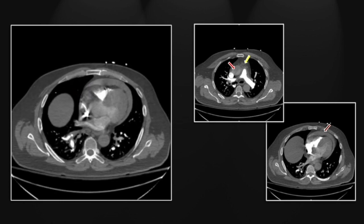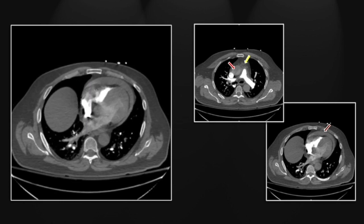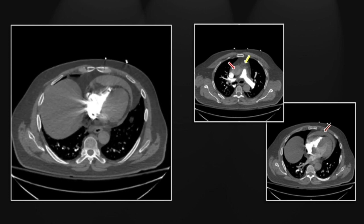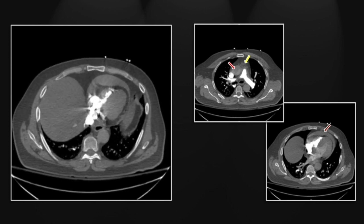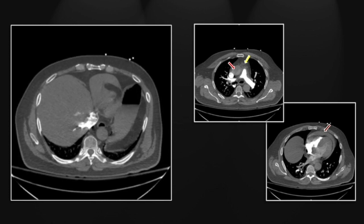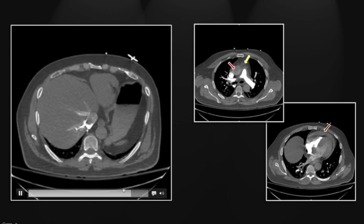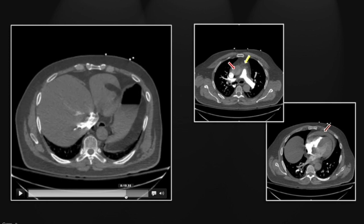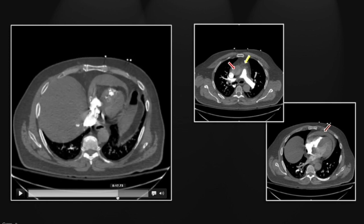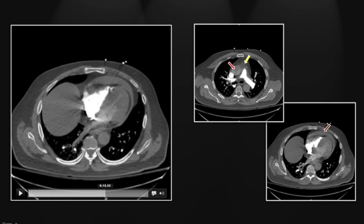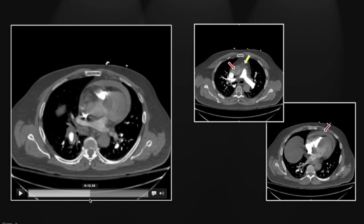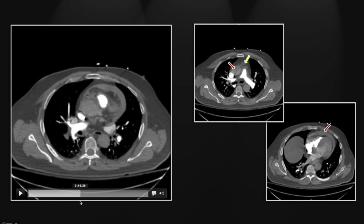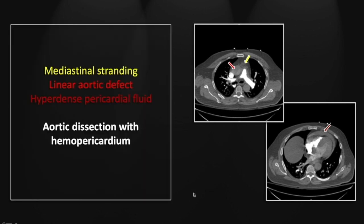Note the distortion of the right ventricle, backflow into the hepatic veins and IVC, and of course an extensive isodense or even hyperdense pericardial fluid collection. So that is an aortic dissection with hemopericardium.